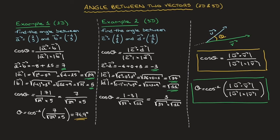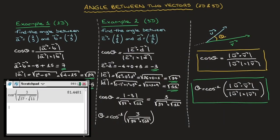Finally, the angle theta equals the inverse cosine of 3 over the square root of 37 times the square root of 11. Using a calculator and rounding to one decimal place, we find that equals 81.4 degrees. And that's the answer.